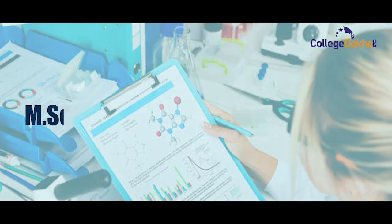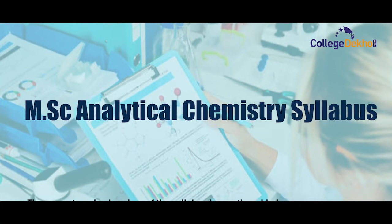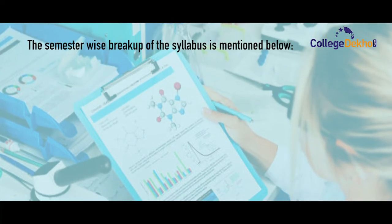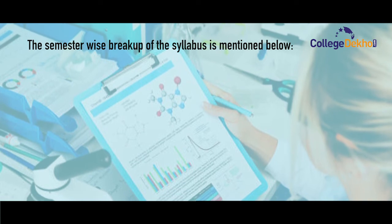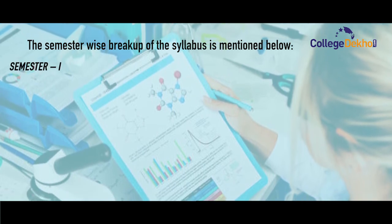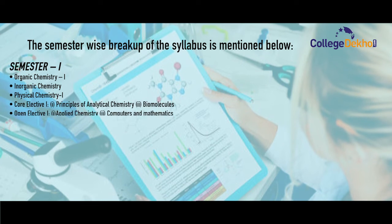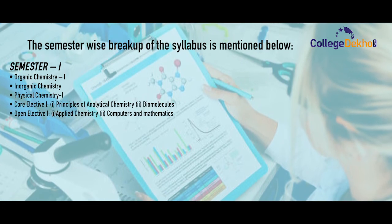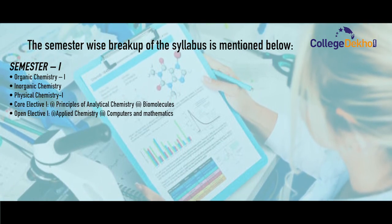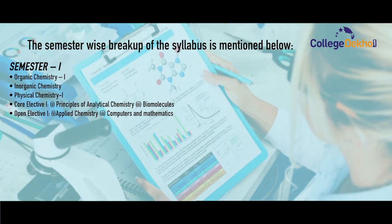The syllabus for MSc Analytical Chemistry course — the semester-wise breakup of syllabus is mentioned below. In the first semester, students will be studying Organic Chemistry, Inorganic Chemistry, Physical Chemistry along with their core elective subject and open elective subject.